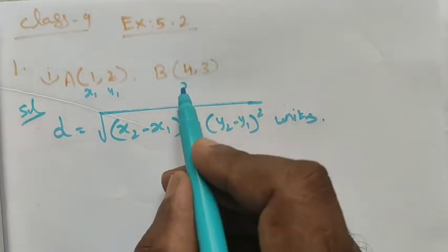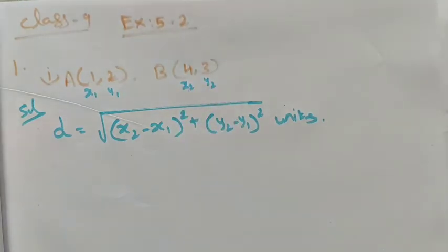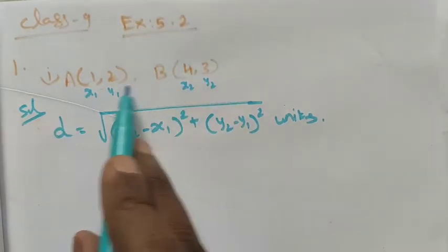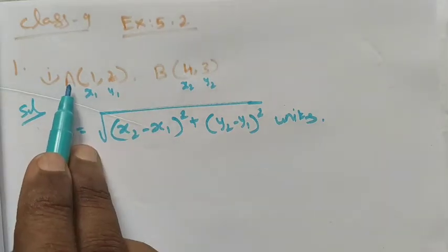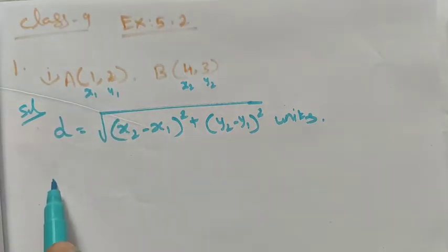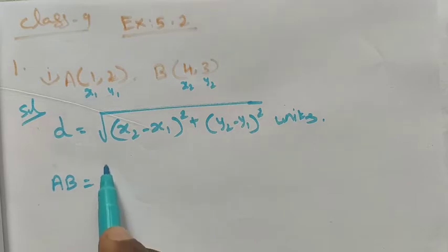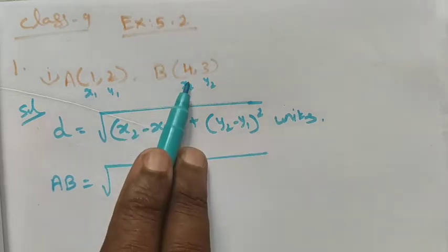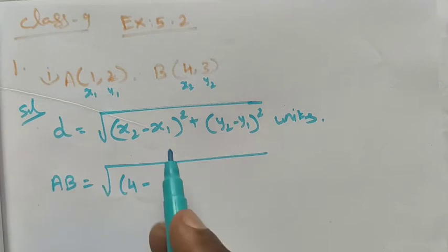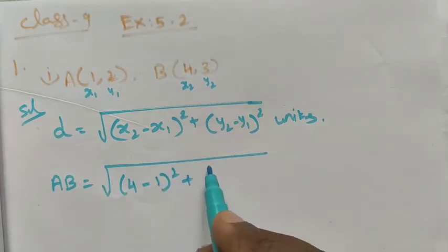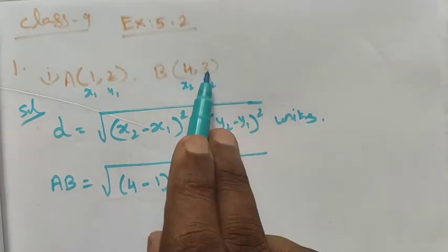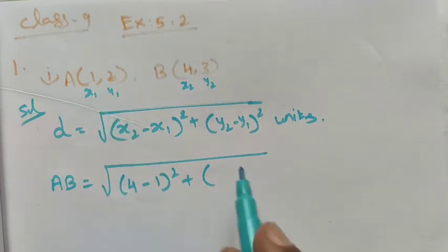...and the second point as (x2,y2). So the distance between the two points—we have taken as A and B—so the distance AB = √((4-1)² + (3-2)²).